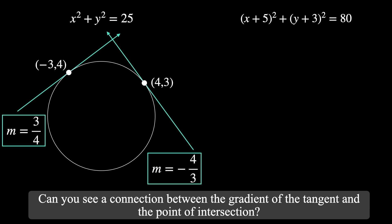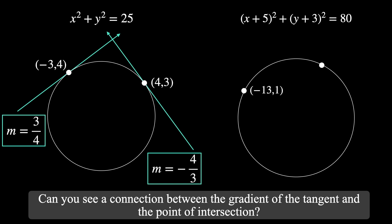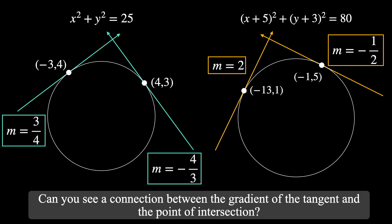Let's test that hypothesis on another example: the circle (x + 5)² + (y + 3)² = 80, with points (−13, 1) and (−1, 5) on the circle. The tangents through these points have gradients of 2 and −1/2. Did the hypothesis hold? For this example you may need to consider the center at (−5, −3). There is a relationship between the point and the gradient, and it's something you'll learn more about when you study differentiation in calculus. I hope you found the video helpful — please leave a like and I'll see you in the next one.